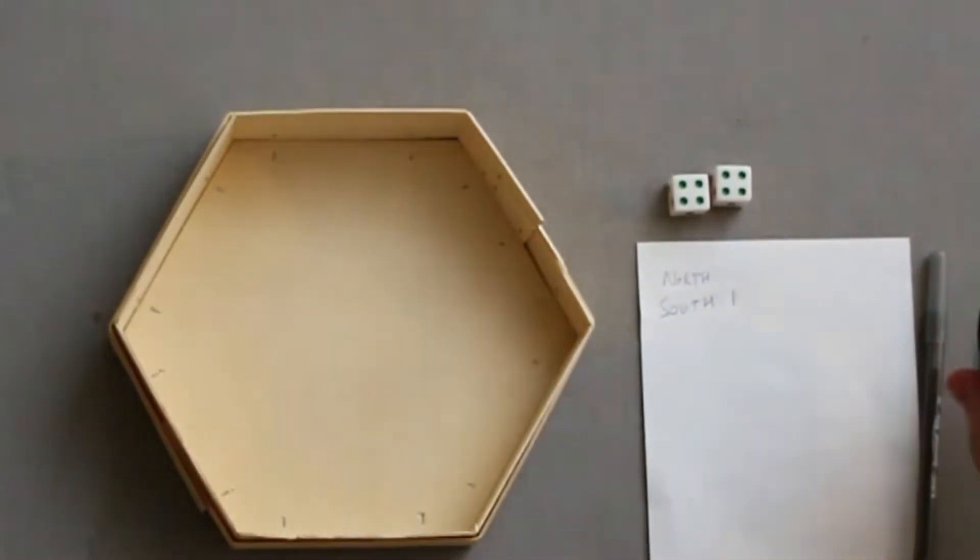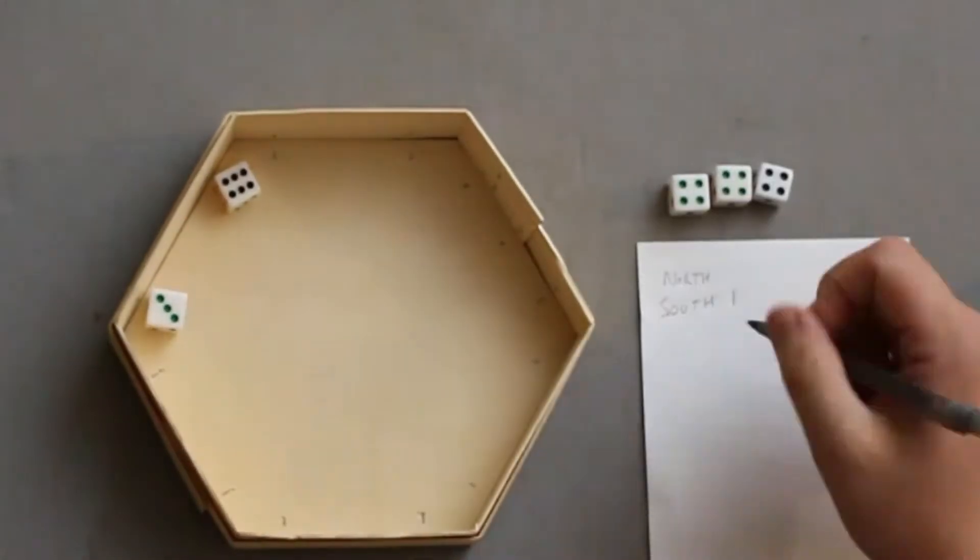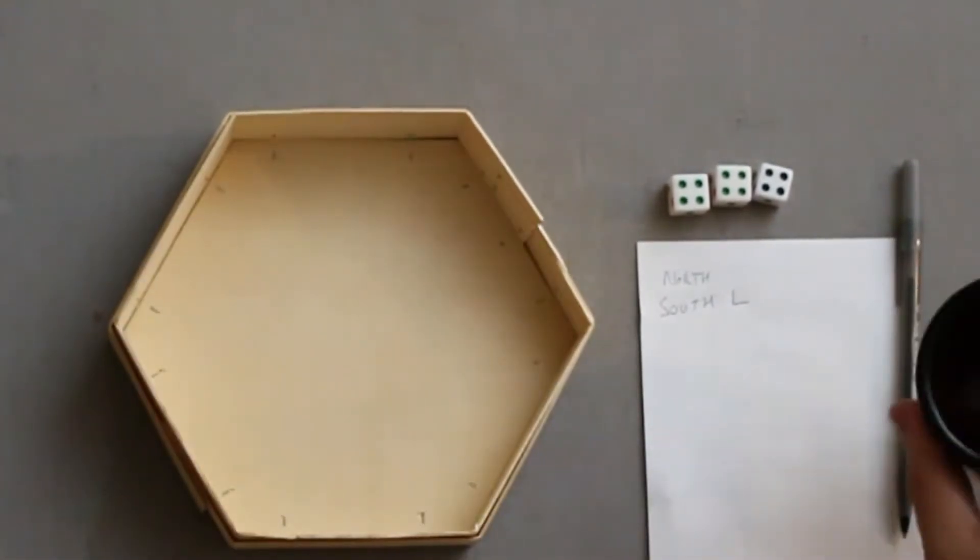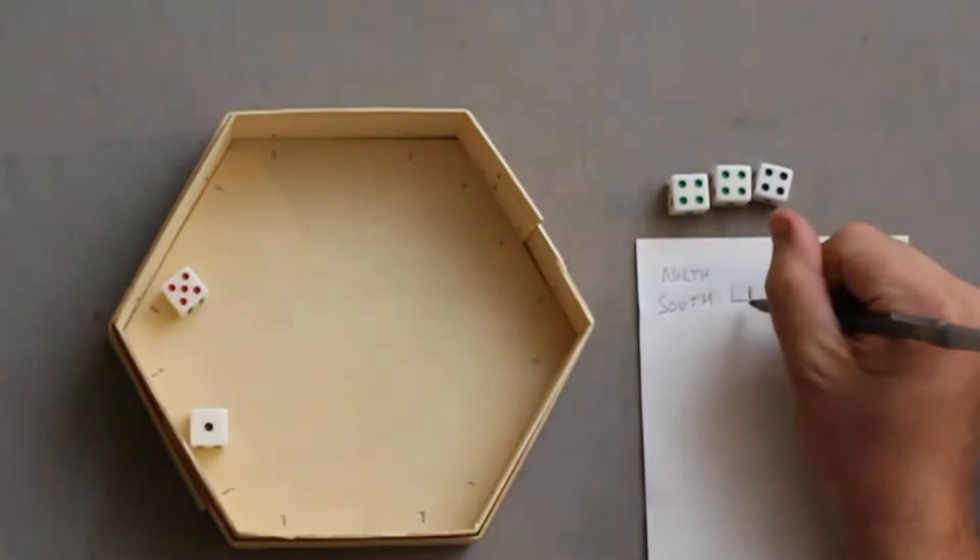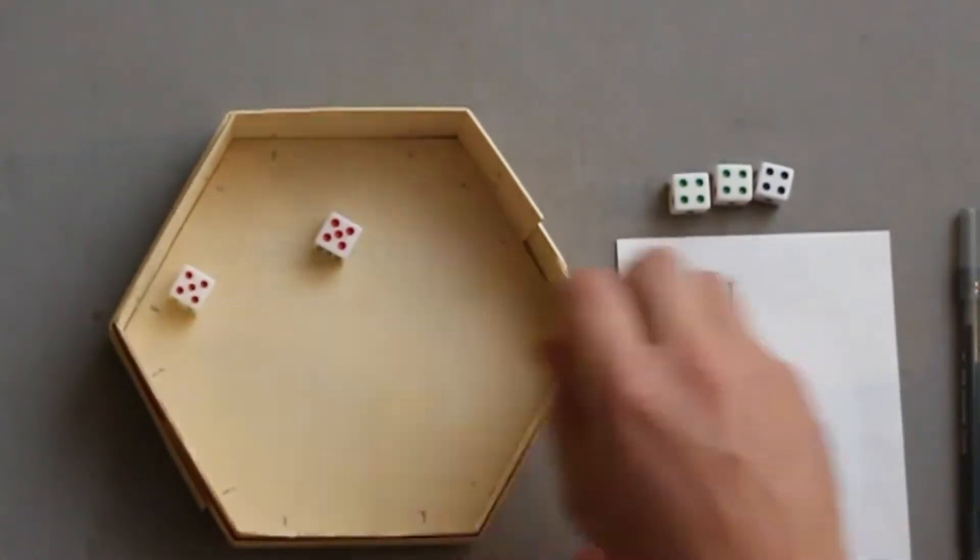But anyways, we're going to roll all 5 dice, hold whichever ones we want, and tally each roll that we made. And so we're going to try to get 5 of a kind. Essentially we're going for a Yahtzee with unlimited re-rolls.